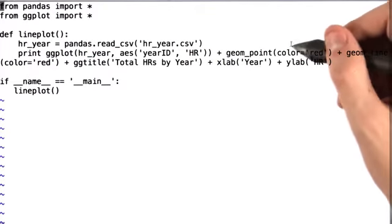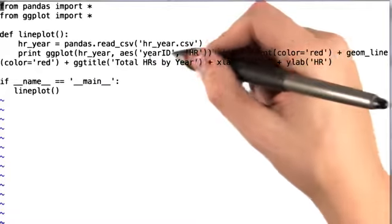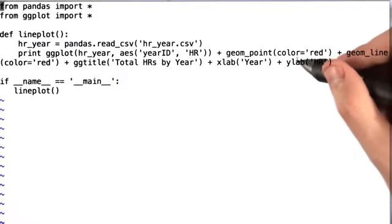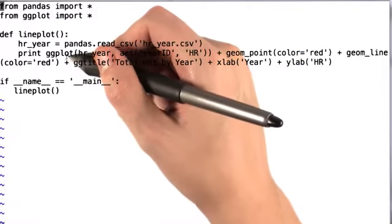Let's add some labels so that our plot is easy to interpret. We'll title it 'Total Home Runs by Year' with the x-label 'Year' and the y-label 'Home Runs'. We print this and we'll generate our chart.